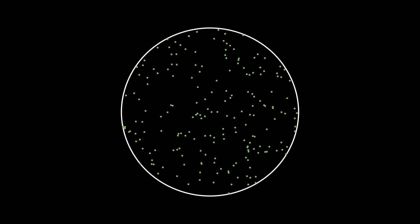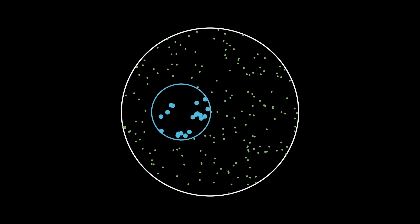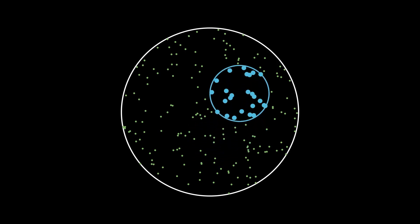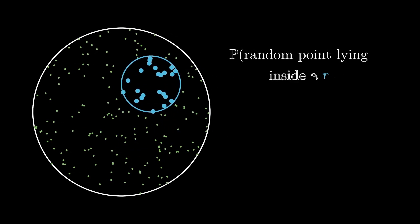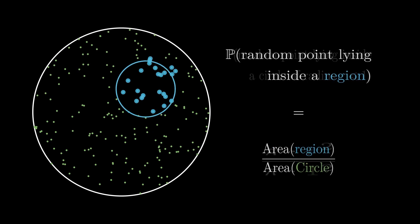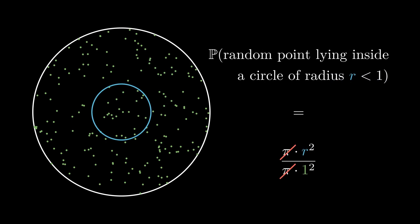The flaw in this argument lies in misinterpreting the randomness alluded to in the question. When mathematicians say that they are selecting a point uniformly randomly in a circle, it is implied that the probability of a point lying in any area inside the circle is equal to the ratio of the area of that region to that of the circle. For the specific case of a circle of radius r, the probability of a point lying at a distance less than or equal to r is r².